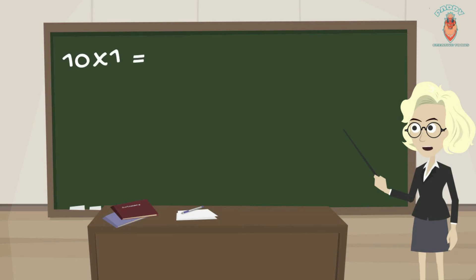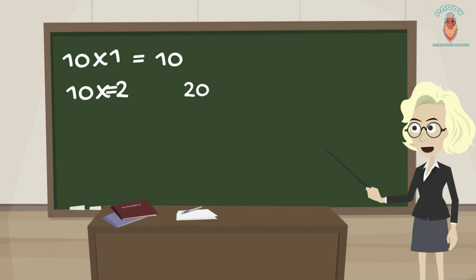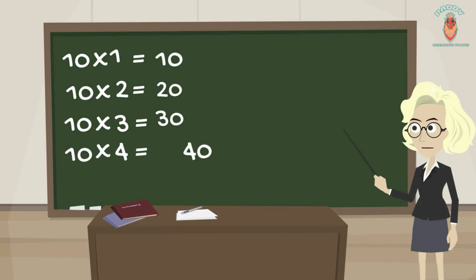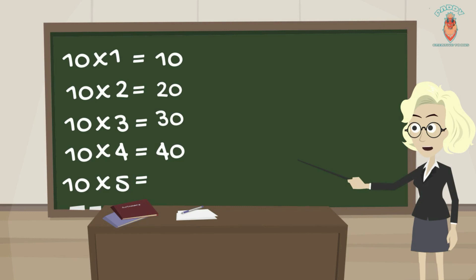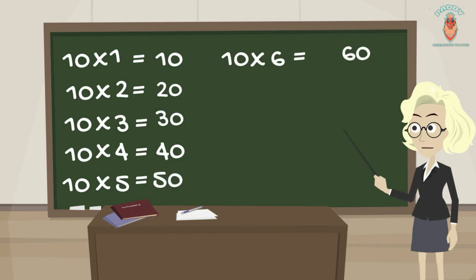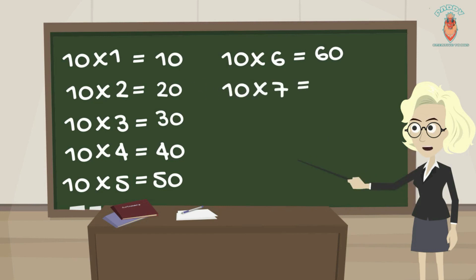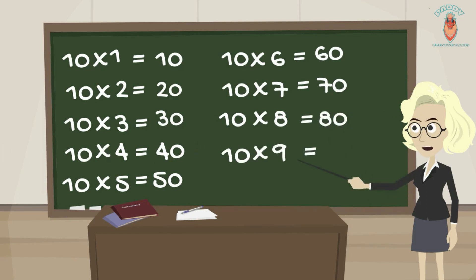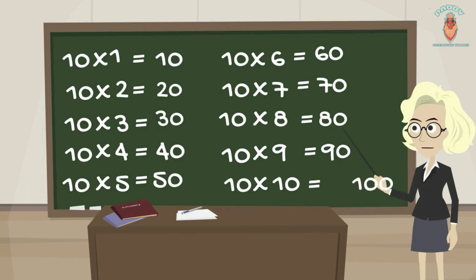10 1s are 10, 10 2s are 20, 10 3s are 30, 10 4s are 40, 10 5s are 50, 10 6s are 60, 10 7s are 70, 10 8s are 80, 10 9s are 90, 10 10s are 100. Great.